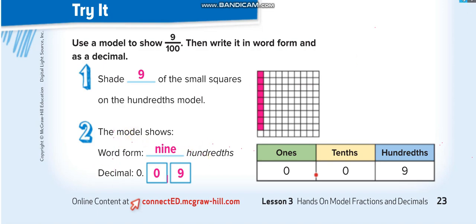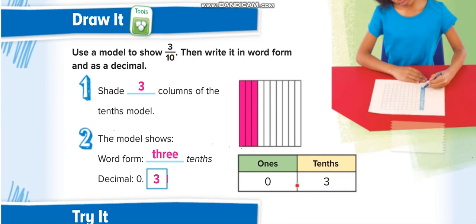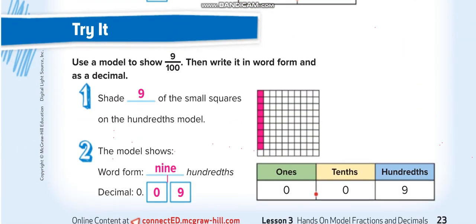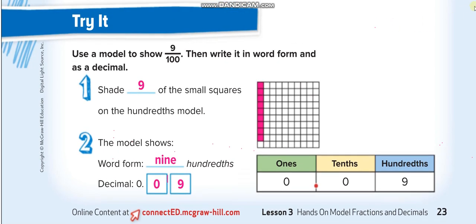We have three out of ten — that's why we call it 'three tenths.' When we read it in word form we say 'three tenths,' and when we write it as a decimal we write it as 0.3.